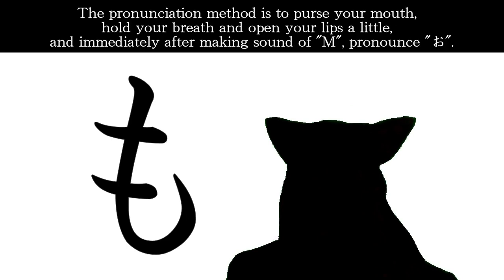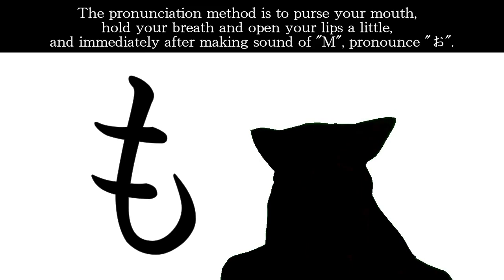The pronunciation method is to purse your mouth, hold your breath, and open your lips a little. And immediately after making sound of M, pronounce O.